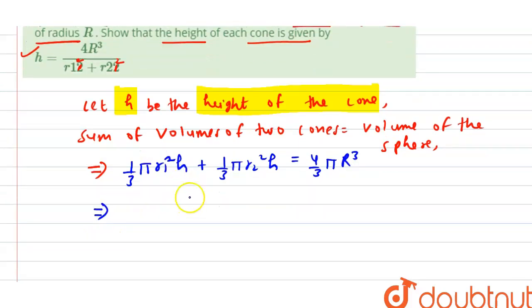If we take the common terms, we have 1/3 π H (R1² + R2²) equals 4/3 π R³. Now if you see, this will cancel out.